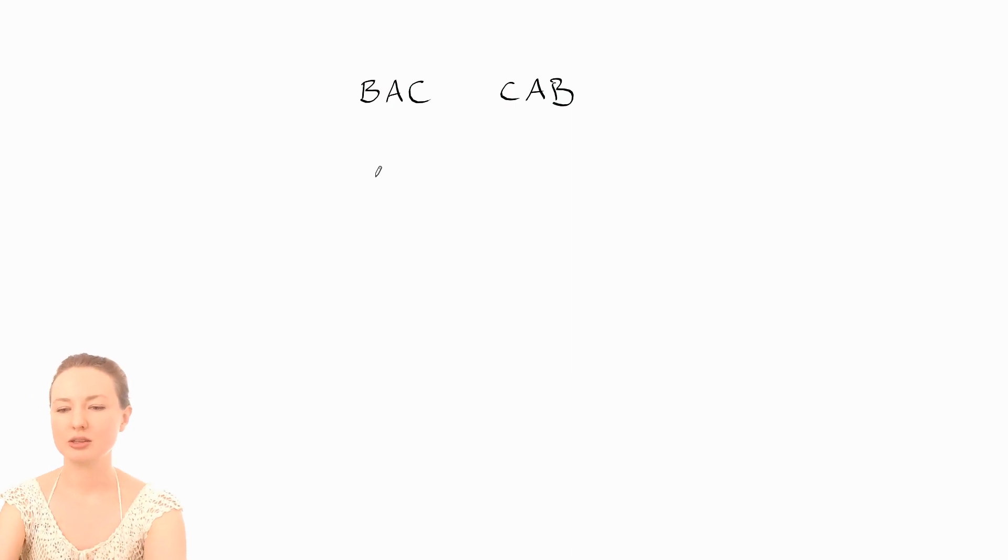So we want to start with A, B, C - that would be the first one alphabetically. And then it would be A, C, B as the next one. Now there's no other way that we can have A first, so we know that we've got all the possibilities where A is first.